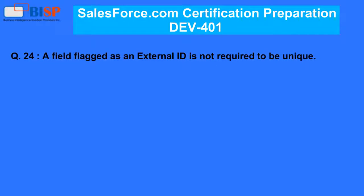Question 24. A field flagged as an external ID is not required to be unique. A. True. B. False.